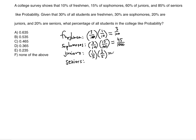So the total percentage of all students that are juniors and like probability will be 3 over 25. Now finally the seniors — there are 20% seniors, so it's 1 over 5. Of all the seniors in the college, 85% like probability, so we multiply 85 divided by 100 by one-fifth. As a result, the percentage of all students in the college that are seniors and like probability is 85 over 500.